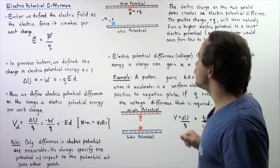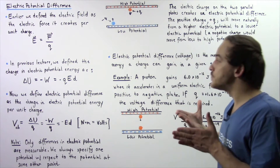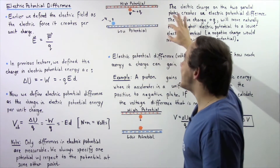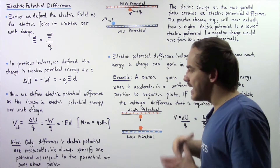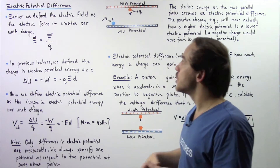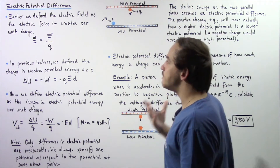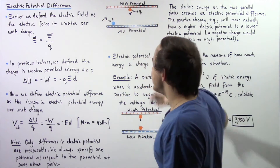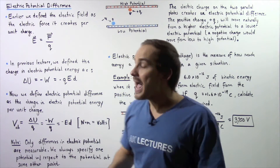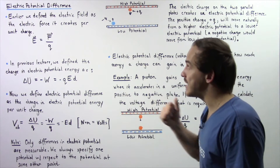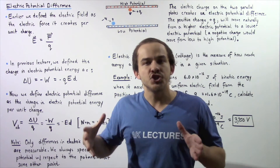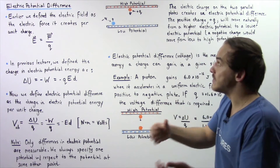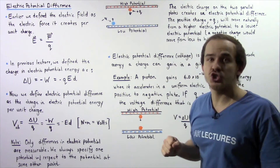Consider the following setup: two parallel plates — a positive parallel plate and a negative parallel plate. How exactly is our electric potential difference created? The positive plate is defined to have a high electric potential, and the negative plate is defined to have a low electric potential. What actually creates the electric potential difference is the difference in charge. We have a positive charge and a negative charge separated by a distance, and that creates an electric potential difference.